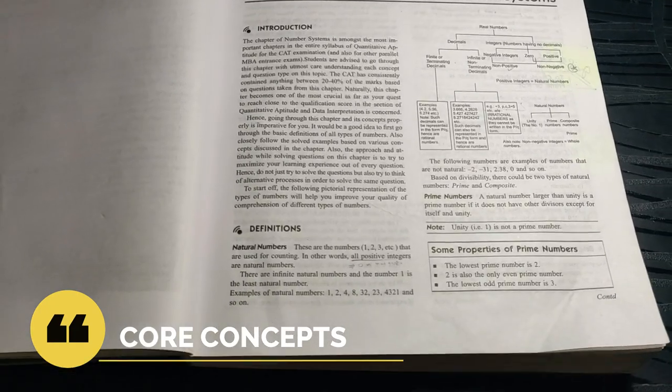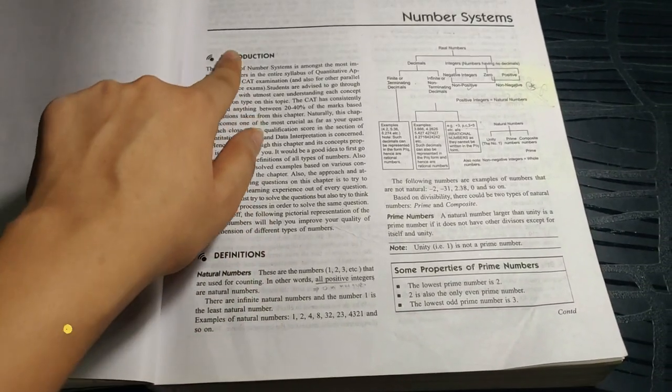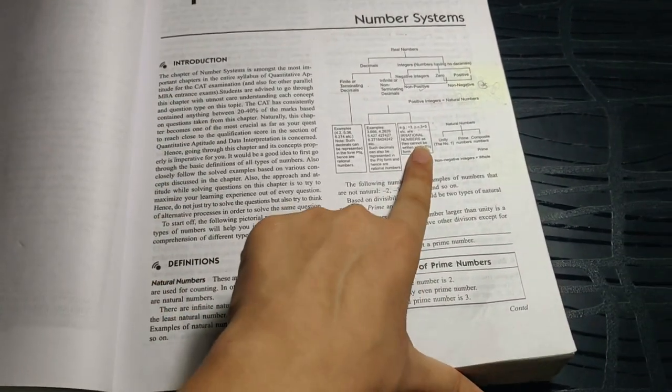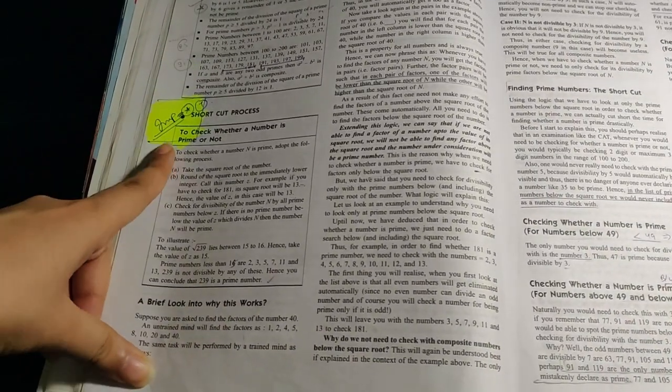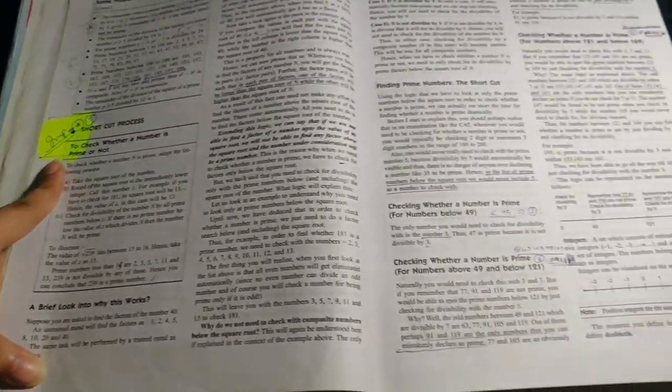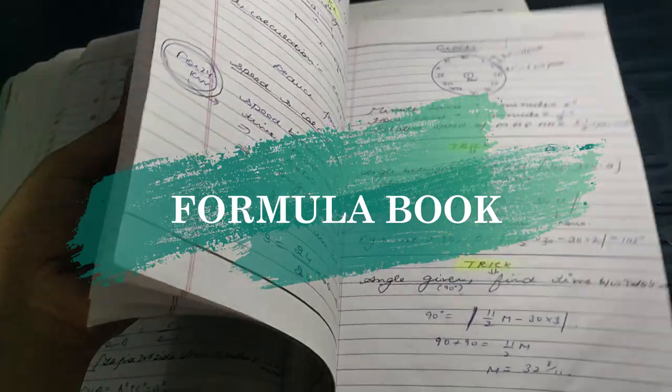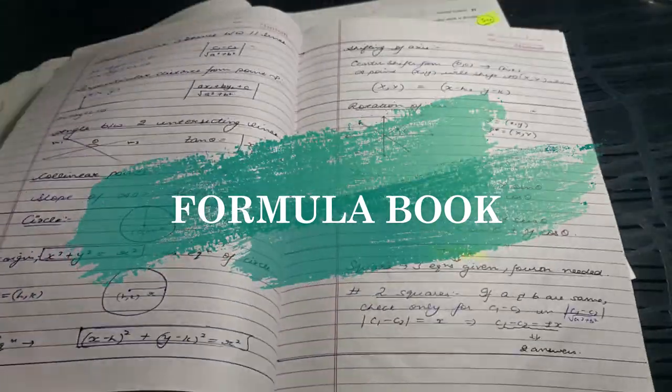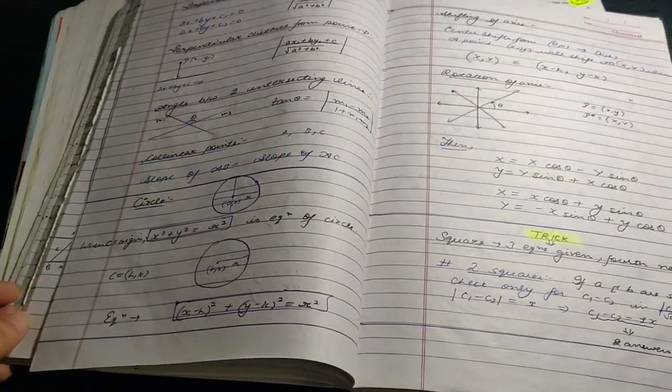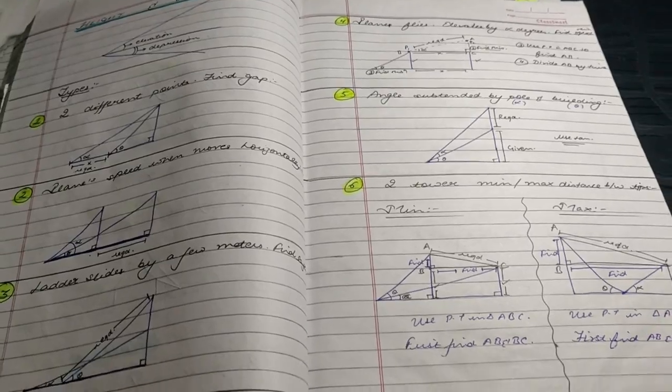This brings us to the next important component, which is core concepts. Core concepts are given in front of each chapter. This is the theory that you are supposed to read before solving the questions. There are many important formulas here. Please take a note of them in your formula book. If you don't have a formula book, please find a link in the description. I have shared my formula book there.